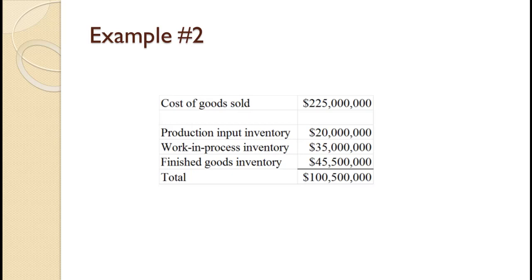In this next example, a firm has cost of goods sold of $225 million. The average value of inventory is shown on the slide, totaling $100,500,000. Calculate the inventory turns and days of supply. Since you've seen an example already, let me suggest that you pause the video and try to work this problem on your own. Once you're done, you can use the video to check your work and spot any mistakes you might have made.